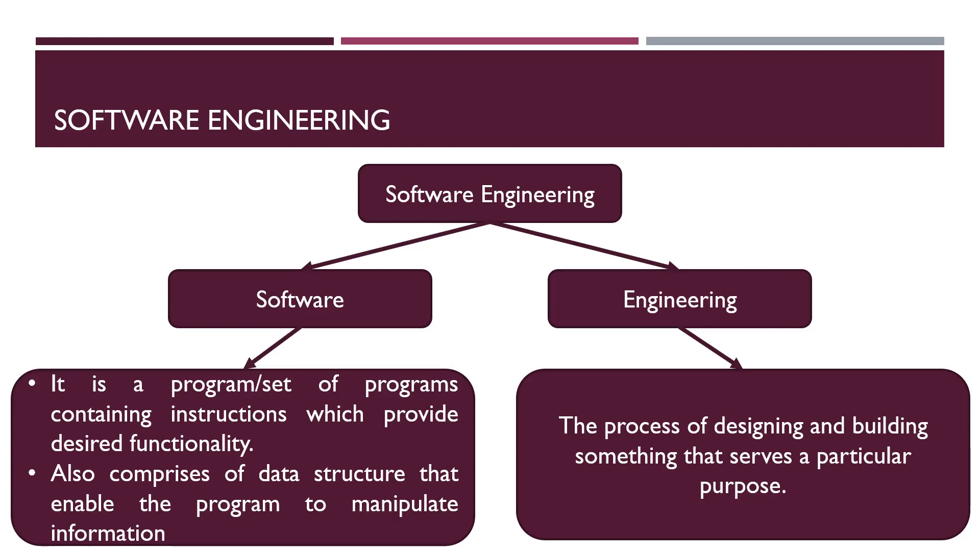Next term is Software. Software is basically a program or set of programs that contains instructions which provides desired output. Program in Software also contains data structure that helps in manipulating information. The term manipulating information is very important because any software takes some input and manipulates the information and then gives the output.